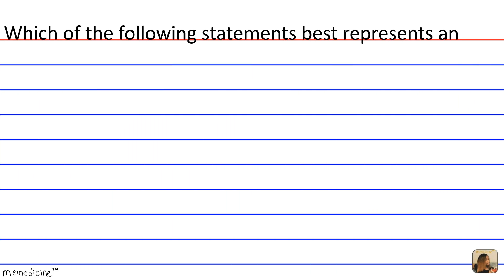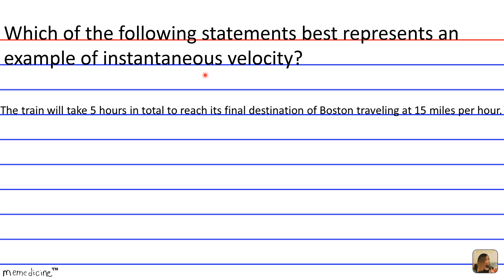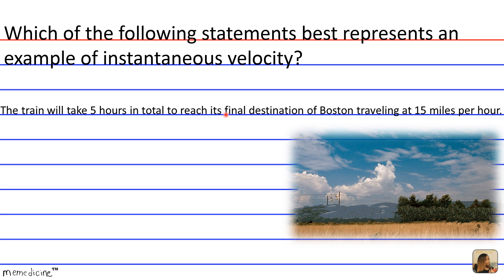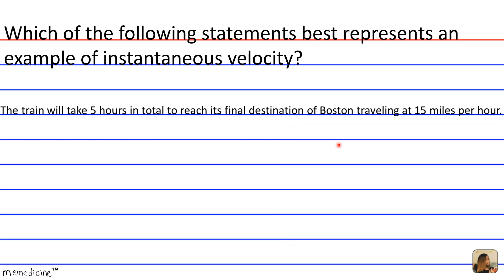Which of the following statements best represents an example of instantaneous velocity? A. The train will take 5 hours in total to reach its final destination of Boston traveling at 15 miles per hour.